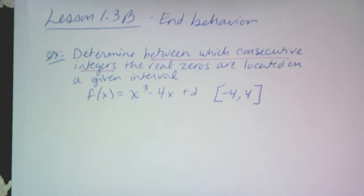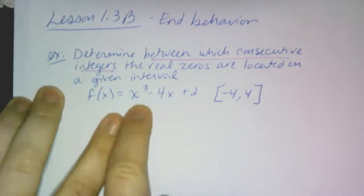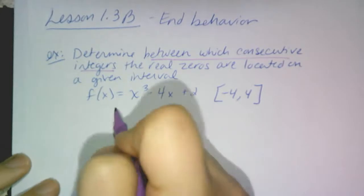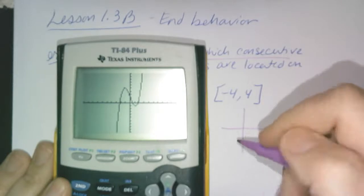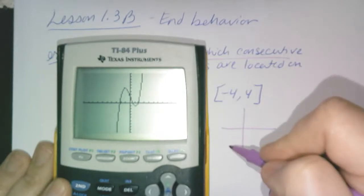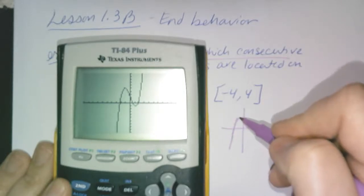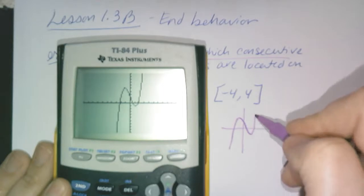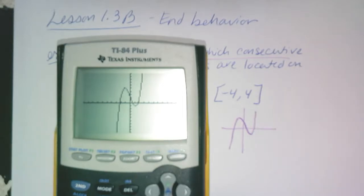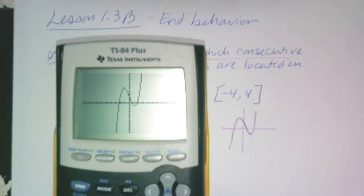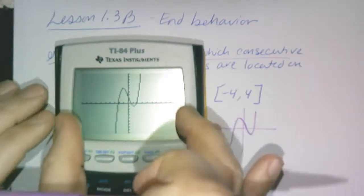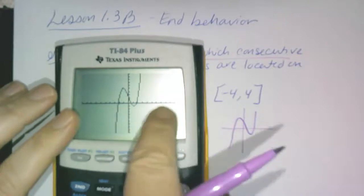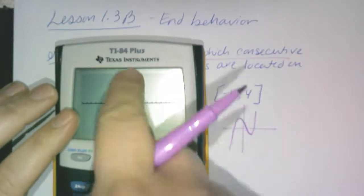So you're going to put this in your calculator right now. Put x to the third minus 4x plus 2. And some of you might just be able to look it from here. For those who don't know, when you do Zoom 6, your calculator is going up by 10, down by negative 10, to the right 10, and to the left 10. Even though it doesn't look as square as it should, each one of these is one unit, 1, 2, 3, 4, 5, et cetera.